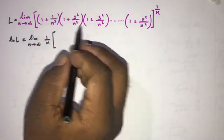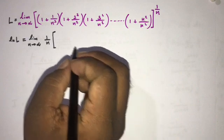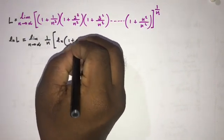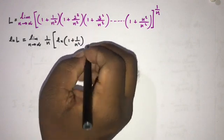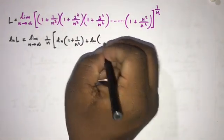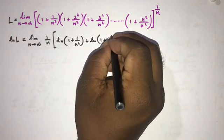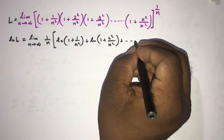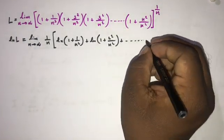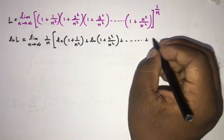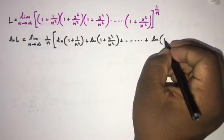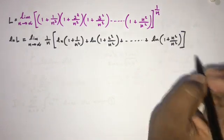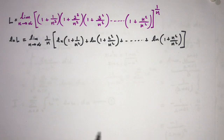Now again, according to the property of natural log, we can write this product as a sum. So we write: natural log(1 + 1/n²) + natural log(1 + 2²/n²), and skipping ahead, the final term is natural log(1 + n²/n²).